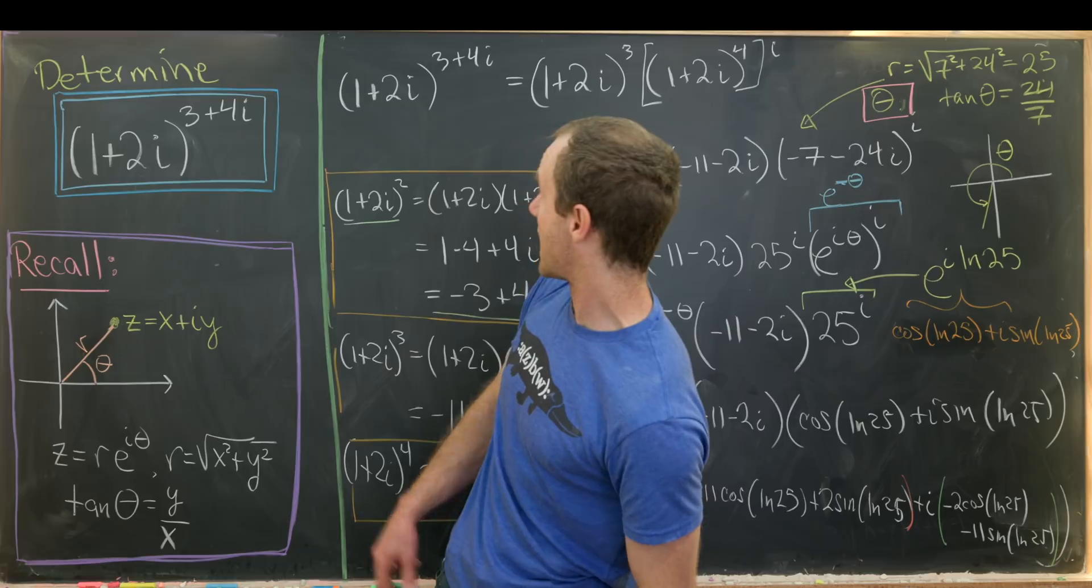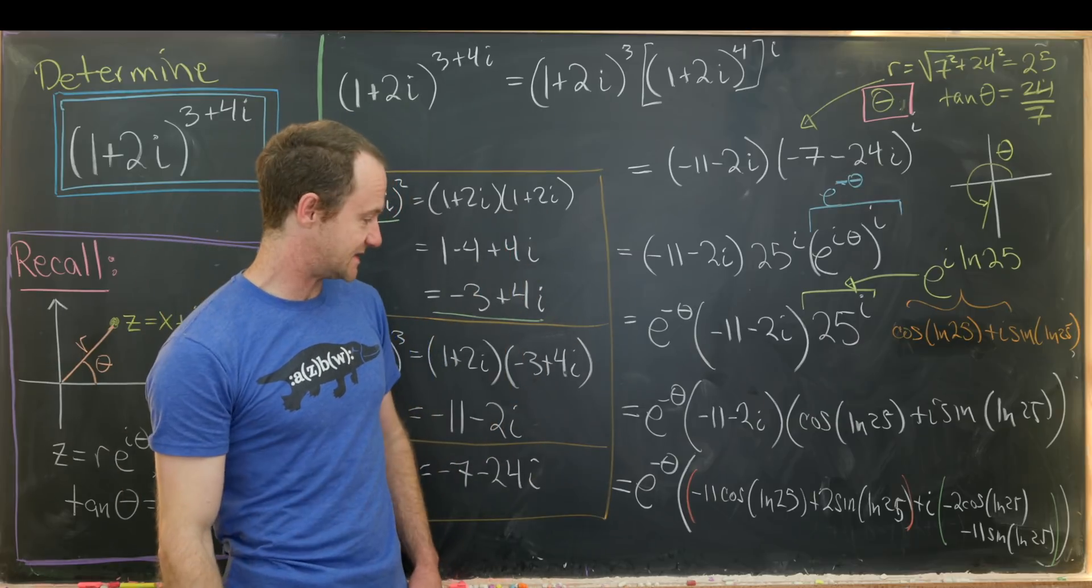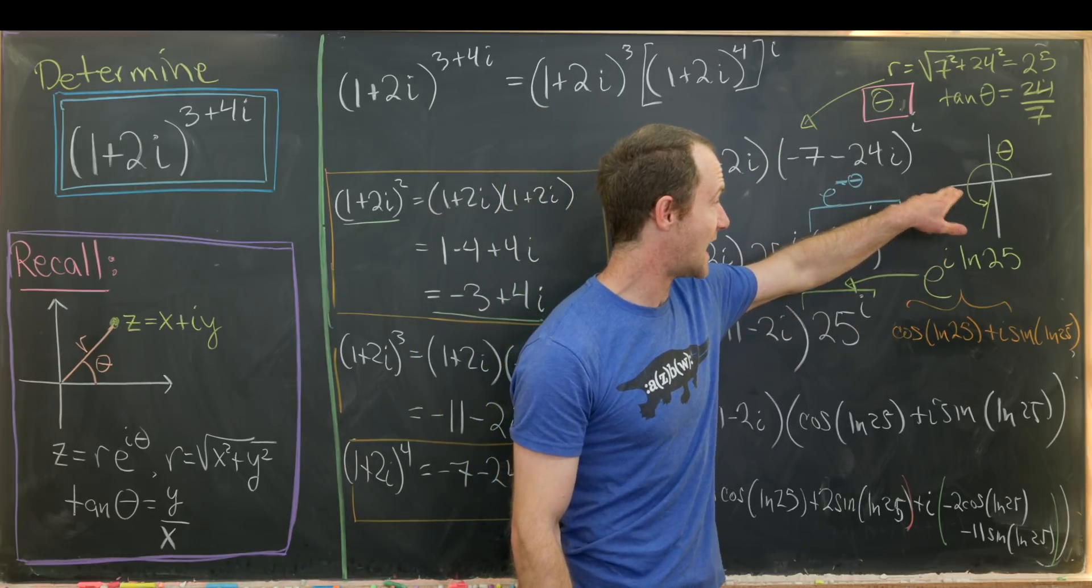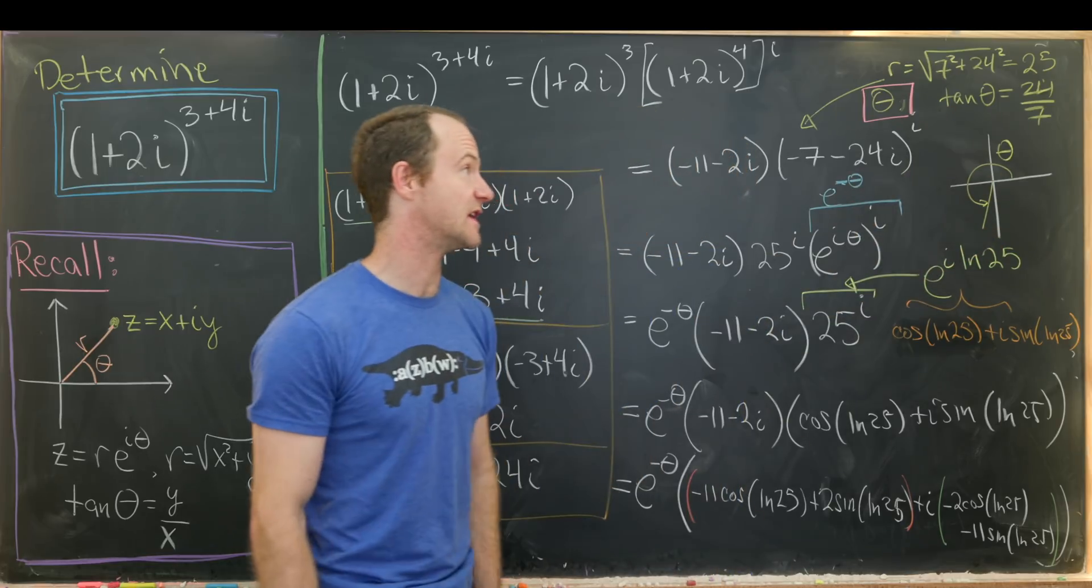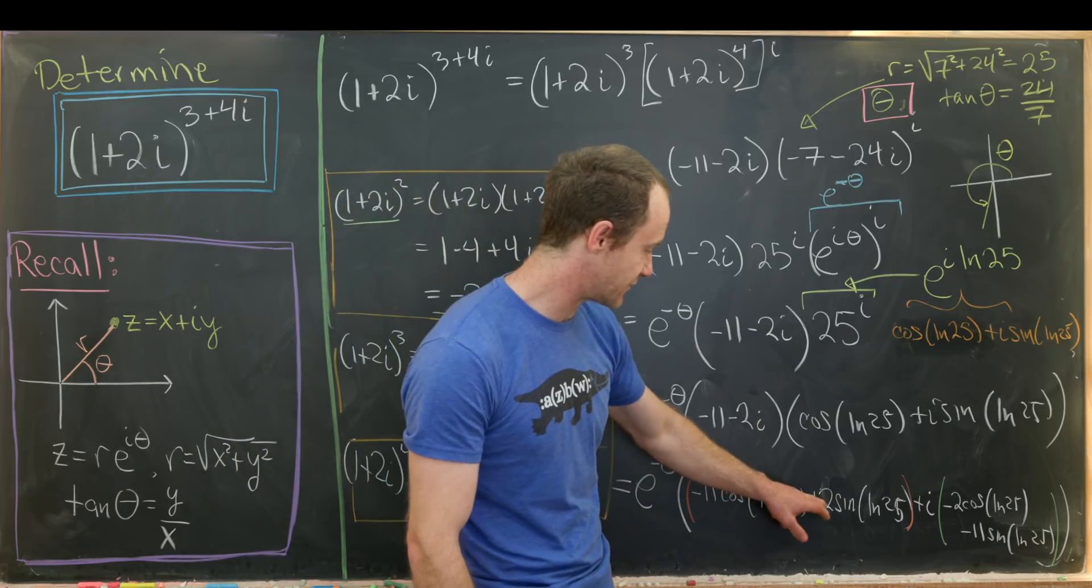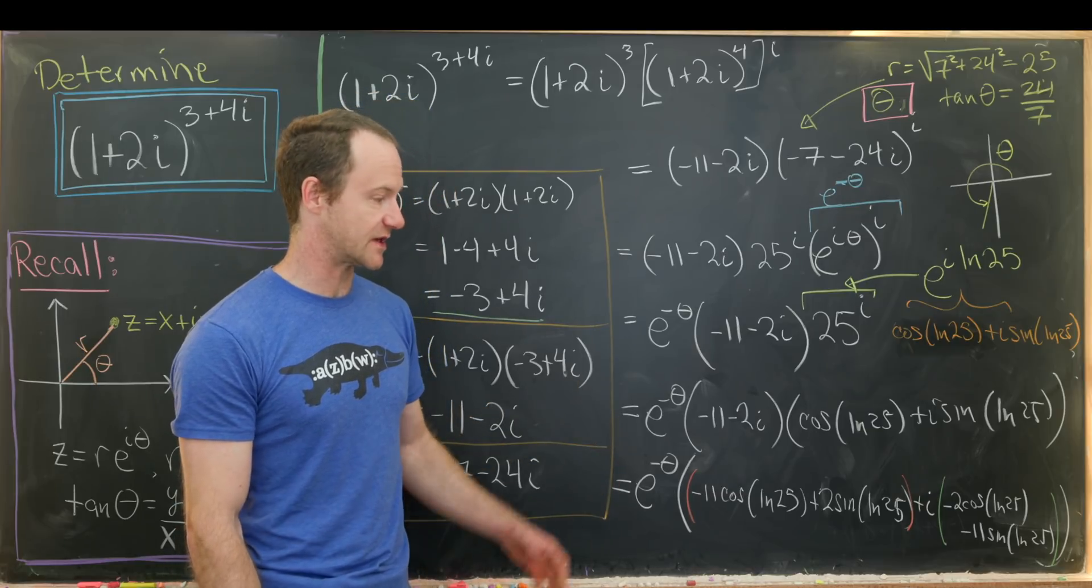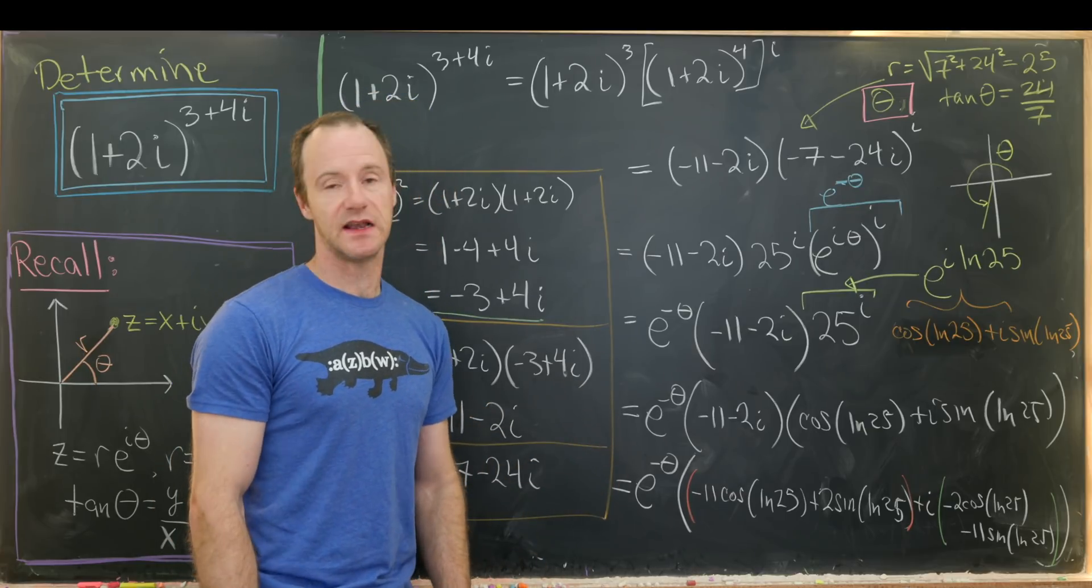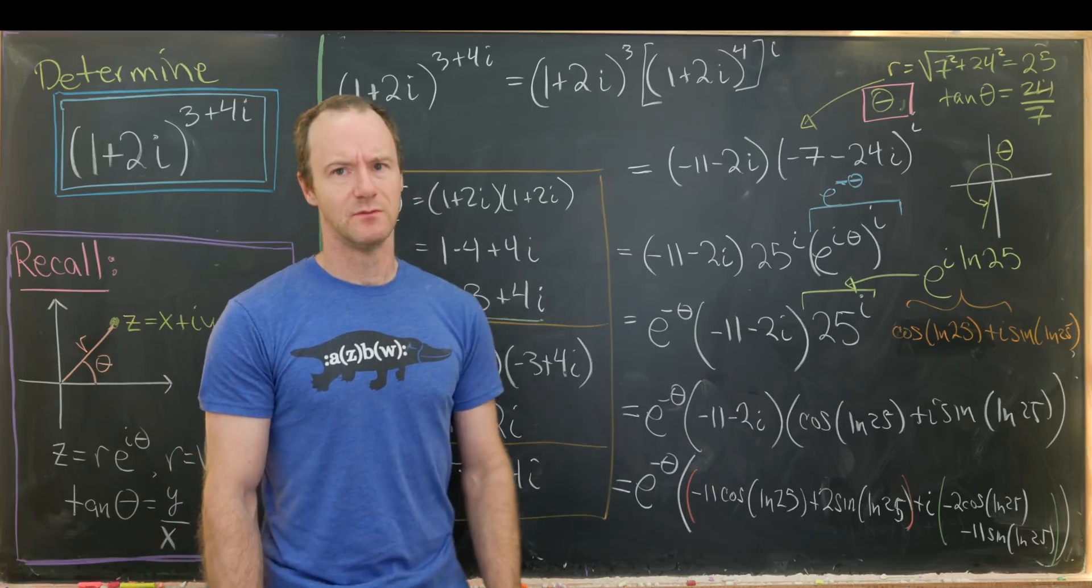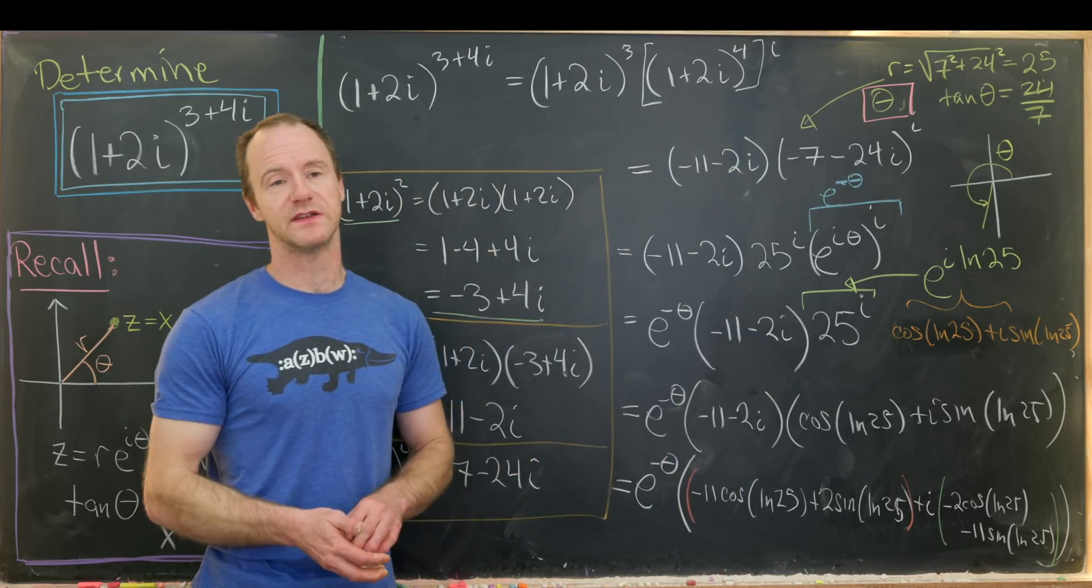So just to look in the end, what do we have? Our number 1 plus 2i to the power 3 plus 4i simplifies down to e to the minus theta, where theta is the number between pi and 3 pi over 4, such that the tangent of theta is equal to 24 over 7. And then we have minus 11 cosine of natural log of 25 plus 2 sine natural log of 25 plus i times negative 2 cosine natural log of 25 minus 11 sine natural log of 25. And I think that's maybe as good as we can get. Maybe if you see a better way to write this down, maybe other than this one right here, which is pretty nice, looking back on the whole thing, write it in the comments. And that's a good place to stop.